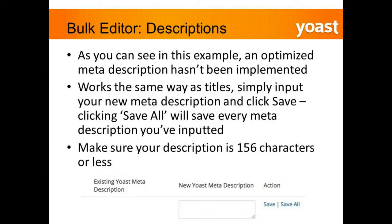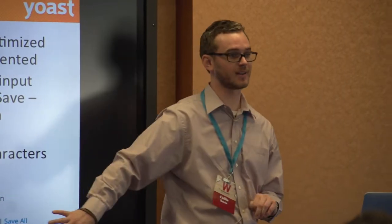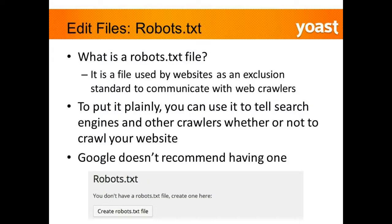The same thing works for descriptions as well — it's not going to tell you whether your description is under 156 characters, so make sure you test it before implementing. For the robots.txt file, it's simply a file used as an exclusion standard for search engines to communicate with their web crawlers. It just tells them whether or not to crawl your site. Google actually doesn't recommend having one, so just leave it alone.